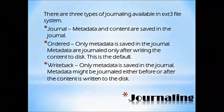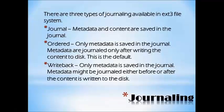There are three types of journaling available in the EXT3 file system: Journal, Ordered, and Write-back. In Journal mode, metadata and content are both saved in the journal. In Ordered mode, only metadata is saved in the journal, and the metadata is journaled only after writing the content to disk — this is the default. In Write-back mode, only metadata is saved in the journal, and metadata might be journaled either before or after the content is written to disk.